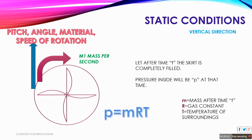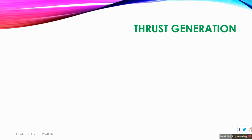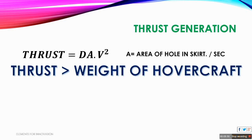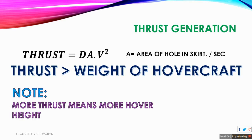Thrust generation is the process which is dependent on the propeller. Thrust is given by: density of air × area of the hole in the skirt × velocity squared, where V is the velocity of the air coming out from the hole. For the hovering of the hovercraft, the thrust must be greater than the weight of the hovercraft, and more thrust means more hovering height.